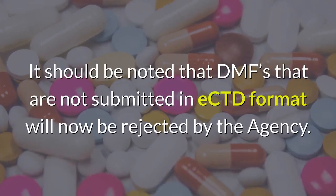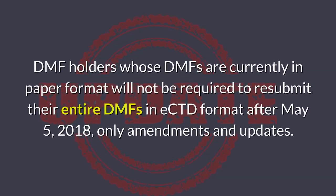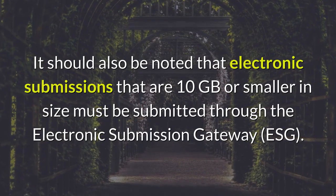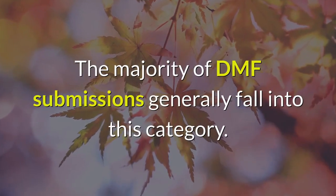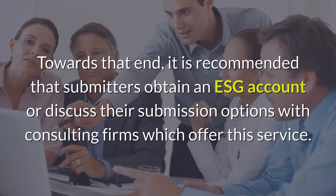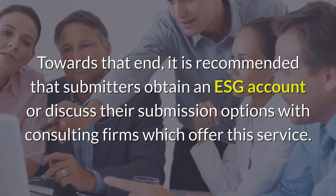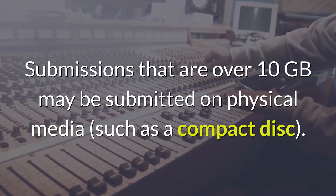DMFs that are not submitted in eCTD format will now be rejected by the agency. DMF holders whose DMFs are currently in paper format will not be required to resubmit their entire DMFs in eCTD format after May 5, 2018 — only amendments and updates. Electronic submissions that are 10 gigabytes or smaller must be submitted through the Electronic Submission Gateway (ESG); the majority of DMF submissions fall into this category, so it is recommended that submitters obtain an ESG account or consult with firms offering this service. Submissions over 10 gigabytes may be submitted on physical media such as a compact disc.